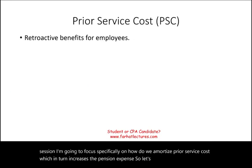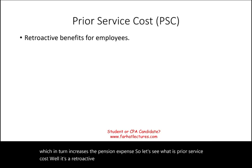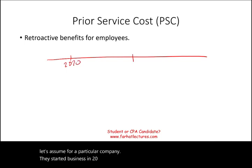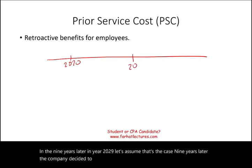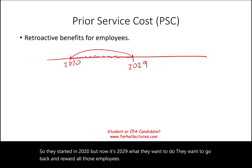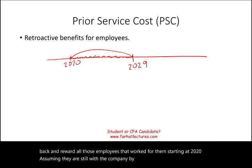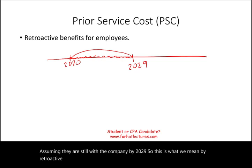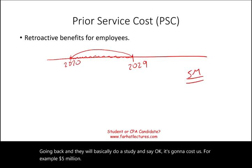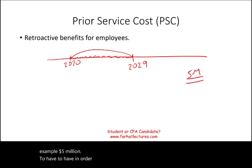So what is prior service cost? Well, it's a retroactive benefit for employees. For example, assume a company started business in 2020 and nine years later in 2029 they decided to start a pension plan. They wanted to reward their employees — the company is doing well — but now it's 2029. They want to go back and reward all those employees that worked starting in 2020, assuming they're still with the company. This is what we mean by retroactive benefits. Going back, they do a study and say it's going to cost five million dollars to reward those employees.